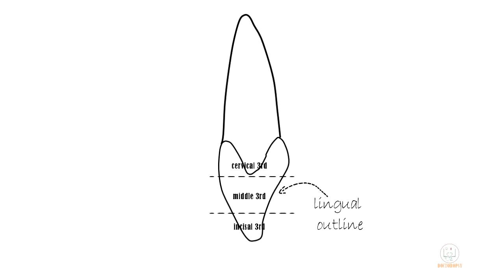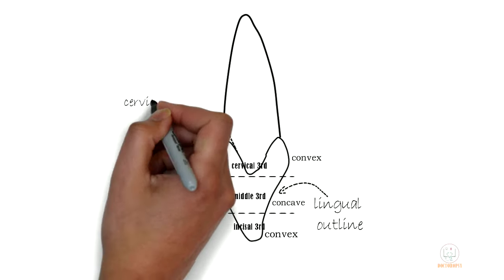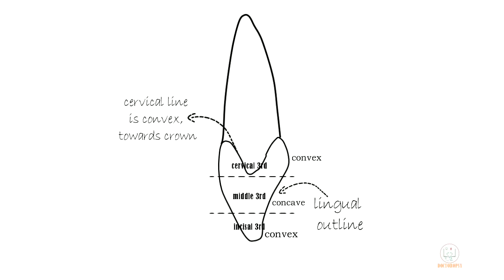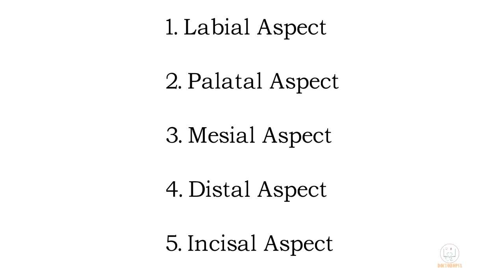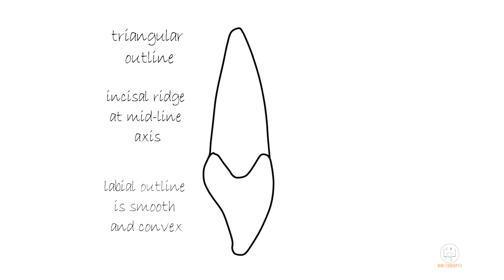The lingual surface is more complex: it is convex in the cervical third due to the cingulum, concave in the middle third due to the lingual fossa, and then convex in the incisal third due to the incisal ridge. The cervical line is convex with convexity towards the crown. The root is smooth, convex, and tapering towards the apex.